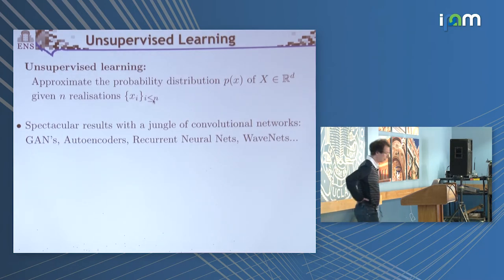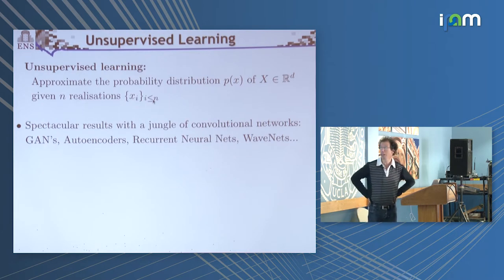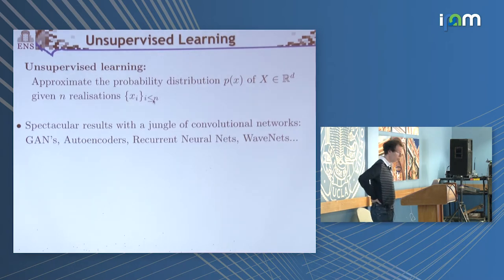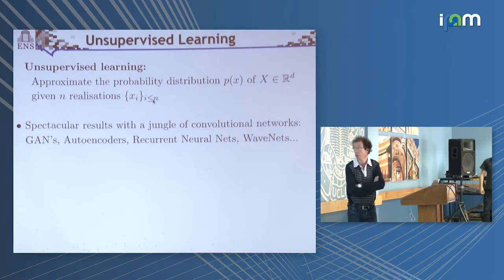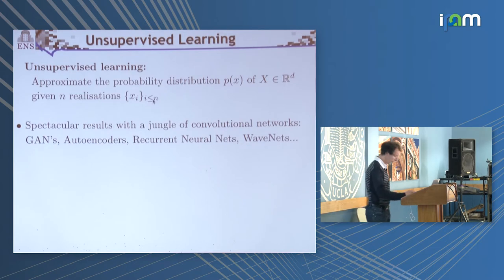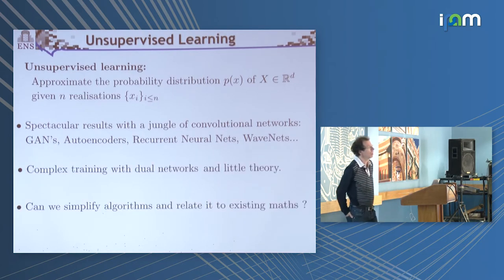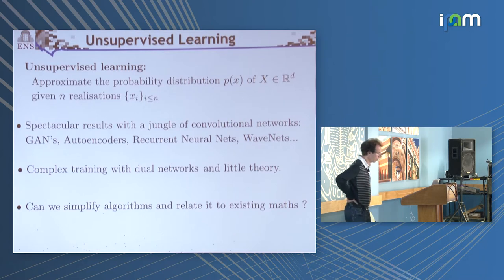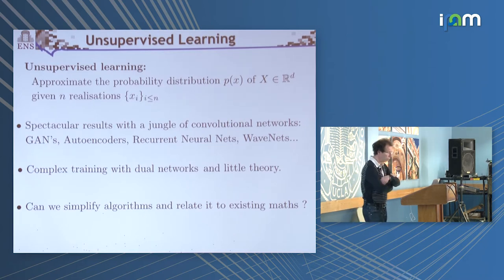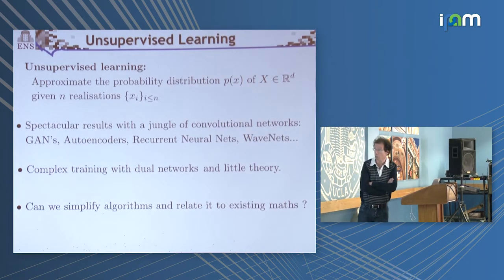As we've seen already in the last two days, there have been absolutely spectacular results obtained with really a jungle of architectures — all kinds of architectures from generative adversarial networks, autoencoders. In the time series world, you have recurrent neural networks and WaveNets. The only difficulty of these beautiful realizations is that they are very difficult to train if you are not versed in the art, because you have two networks playing one against the other. And the second point, of course, is that we understand very little about the mathematics behind.